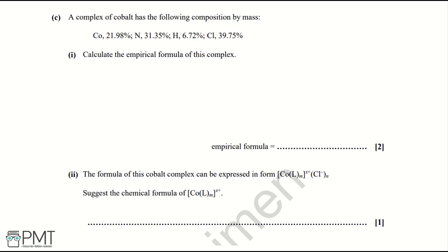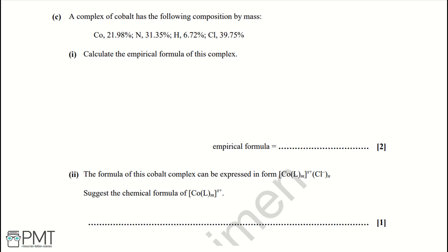Part C: A complex of cobalt has the following composition by mass: cobalt 21.98%, nitrogen 31.35%, hydrogen 6.72%, chlorine 39.75%. Part one, calculate the empirical formula of this complex. When working out empirical formula, we need to take the percentages we've been given or the composition by masses and divide them by the relative formula mass of each element.